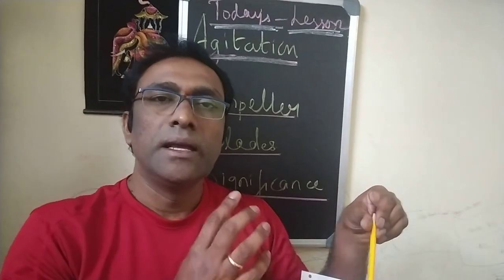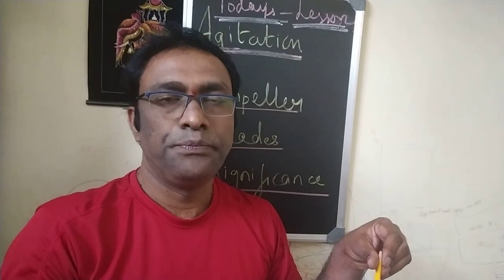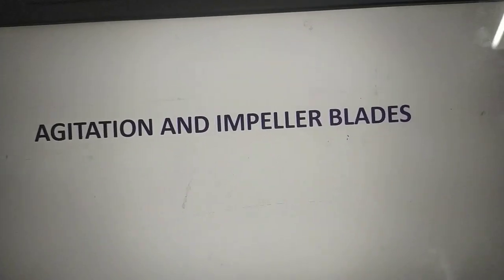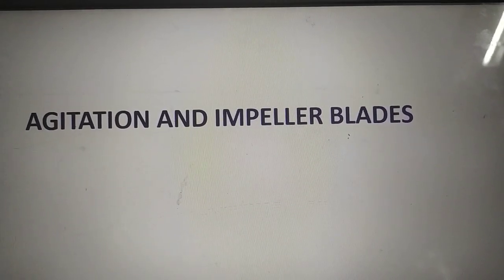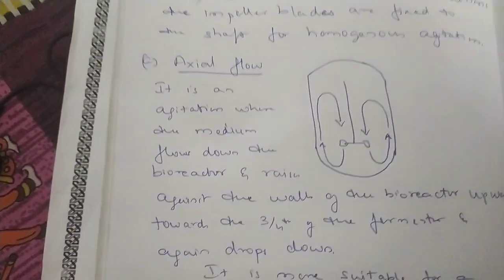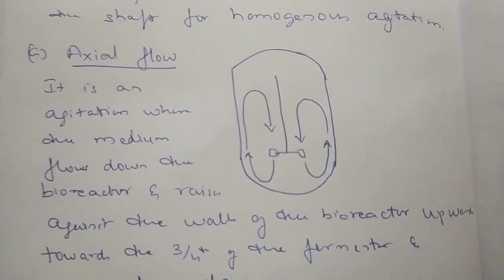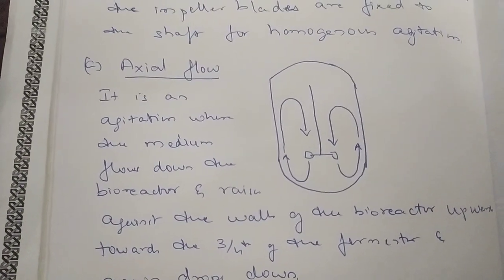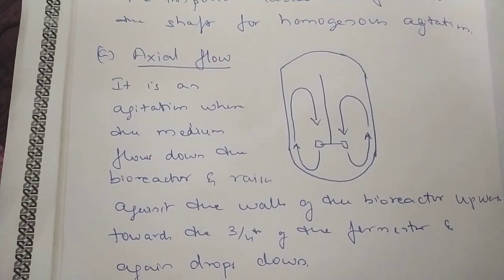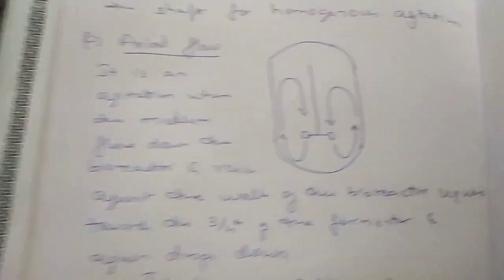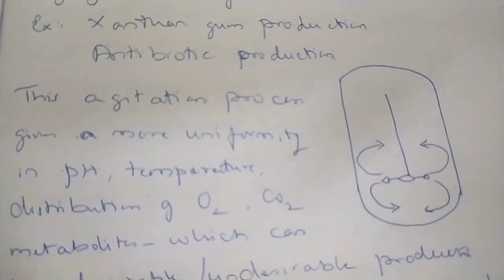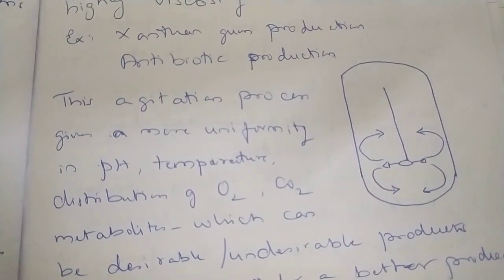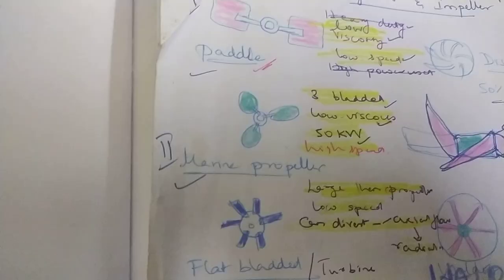Today's topic is agitation and impeller blades. To recollect the mechanisms of axial flow and radial flow — with axial flow, when the impeller blades are rotating, the media and cells go down the fermenter, go along the wall, and come back to the center. Whereas radial flow is a little different, where the impeller blades are moving the media and cells upwards as well as downwards.